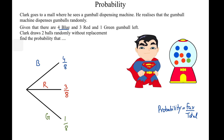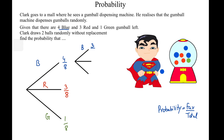Now let's assume the first gumball drawn is blue. For the second attempt, there are again three unique color outcomes, so the tree will again have three branches. But the probability of drawing a blue is now 3 over 7 — the count dropped from four to three, and the total dropped from eight to seven, because this is without replacement.